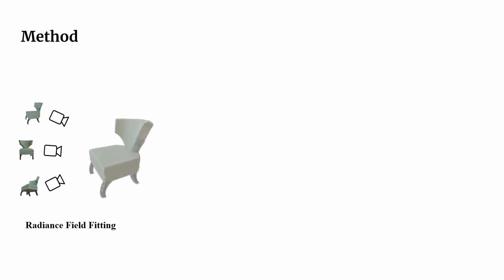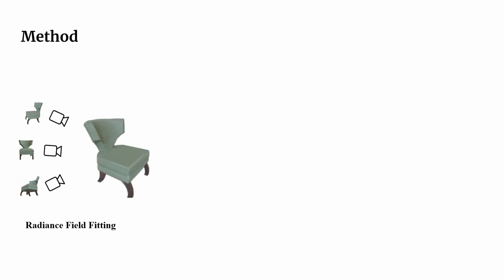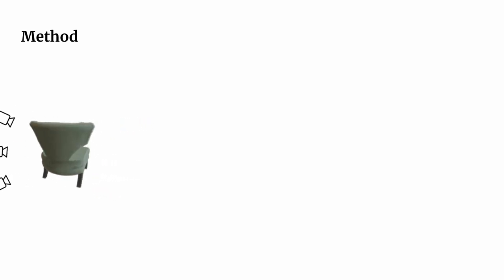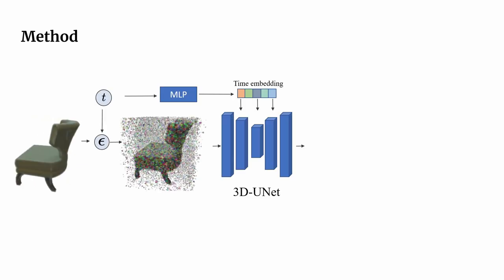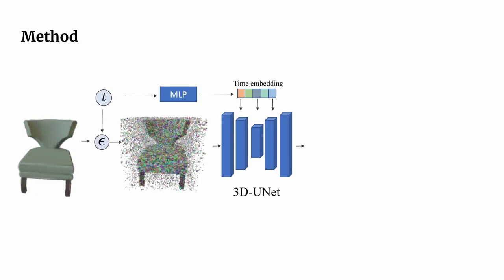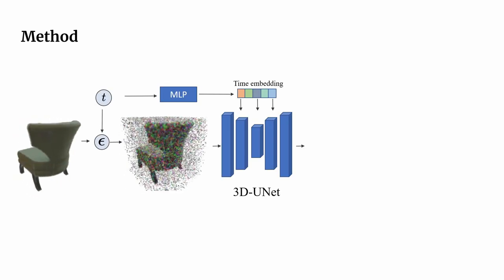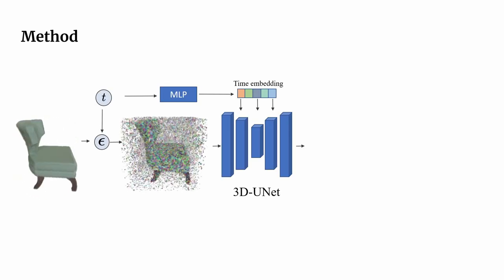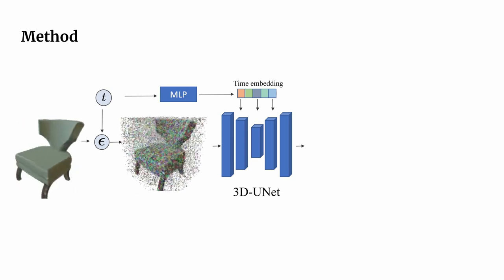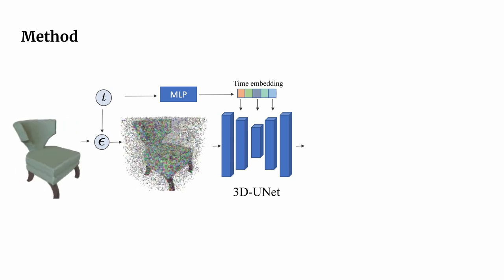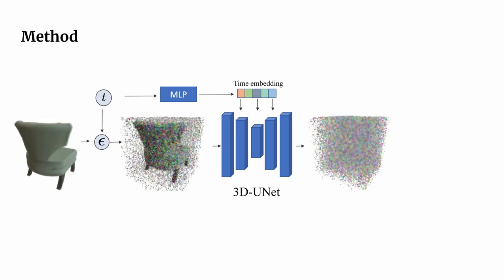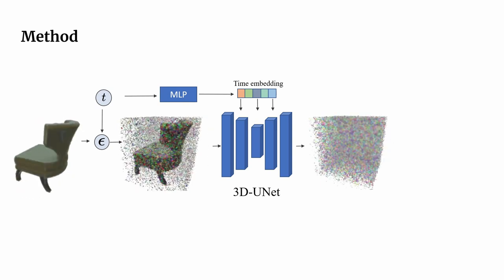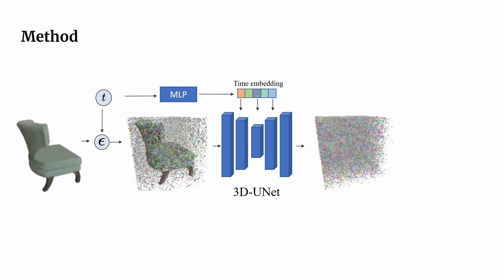During training, our model takes as input a radiance field generated from a set of posed images. Similar to 2D diffusion, we train a time-conditioned 3D U-Net to reverse a Gaussian noising process, which corrupts the input radiance field over time. Given a corrupted radiance field at a certain time step, the U-Net is trained to predict the noise applied at that step.